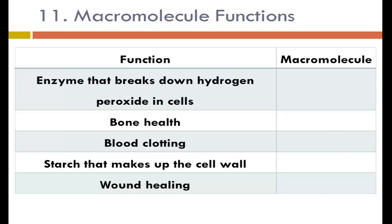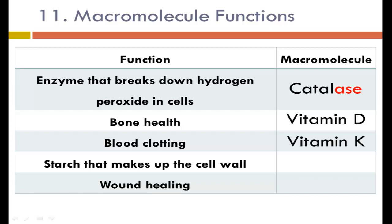Matching macromolecules to their functions: the enzyme that breaks down hydrogen peroxide in cells is catalase — the '-ase' ending tells us it's an enzyme. Bone health corresponds to vitamin D. Blood clotting is vitamin K. The structural component of the cell wall is cellulose — the '-ose' ending signals a sugar. Wound healing is the job of vitamin C.